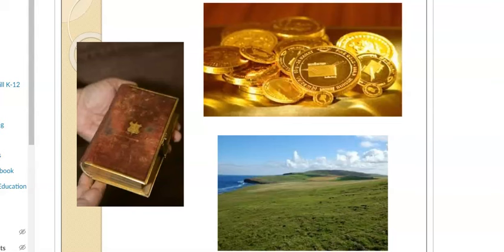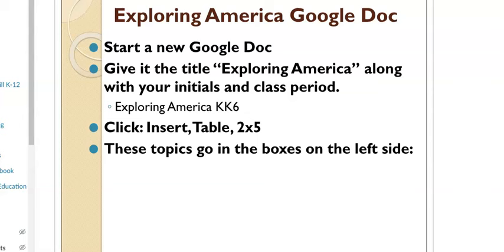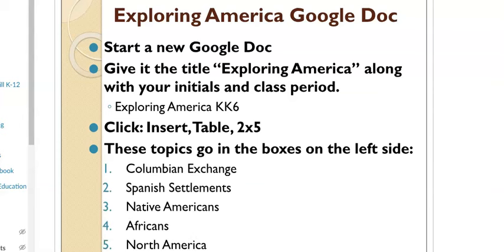What you're going to do is open your Google Doc, go to Insert, then Table — five by two or two by five. Then you're going to put these topics in. We're going to look at how the Columbian Exchange impacts different groups: North America, Africans, Native Americans, Spanish Settlements, and the Columbian Exchange.